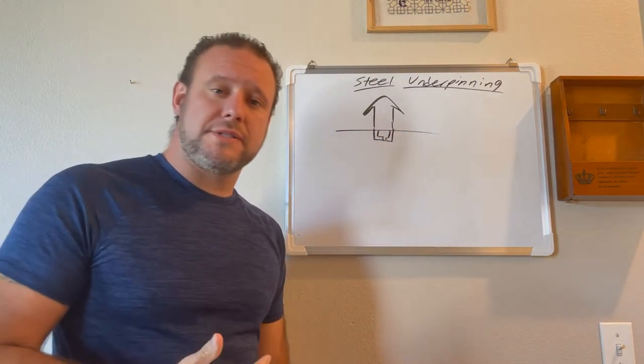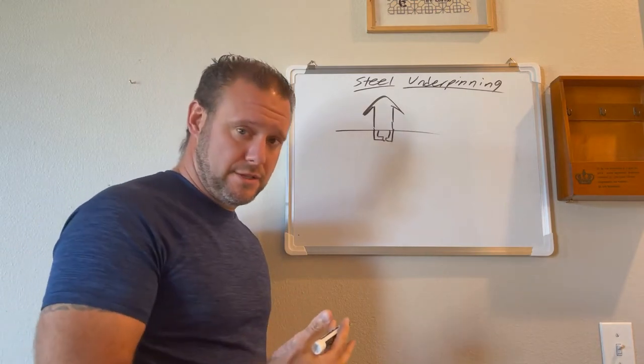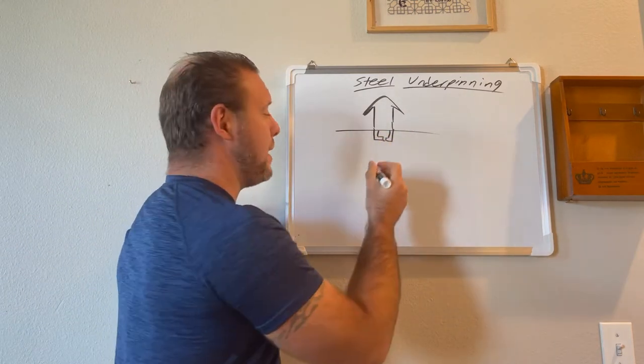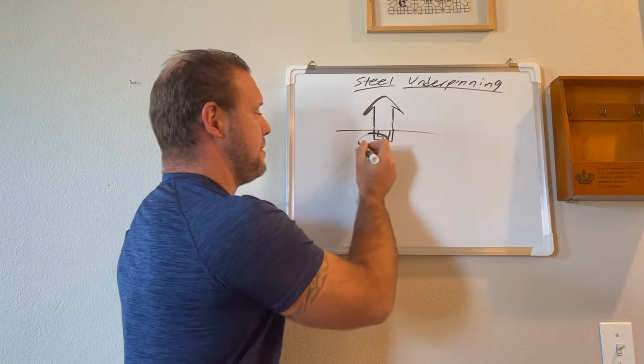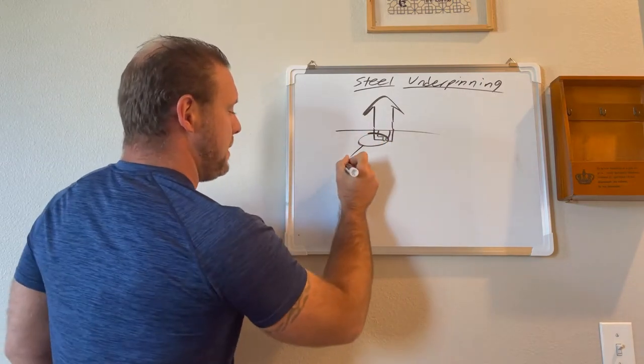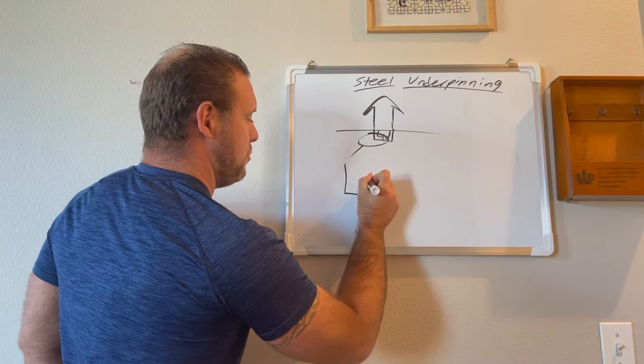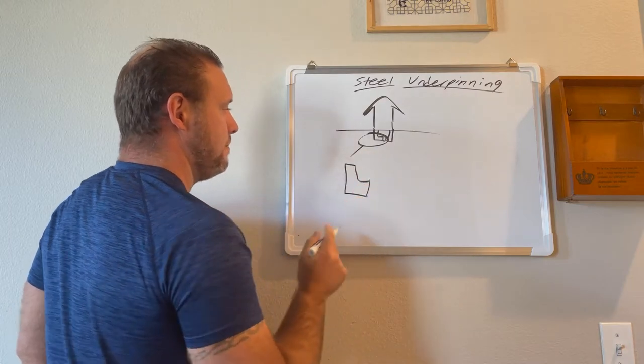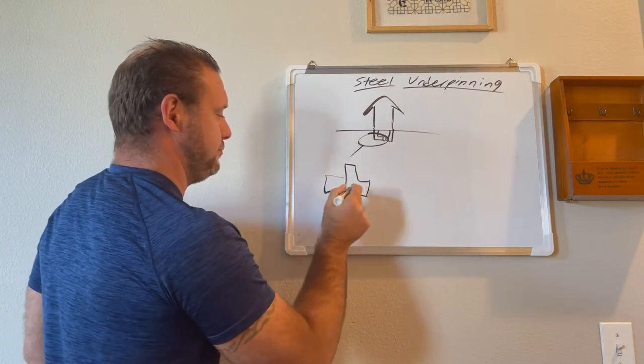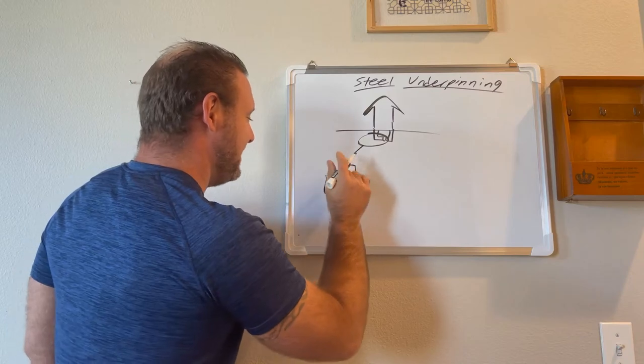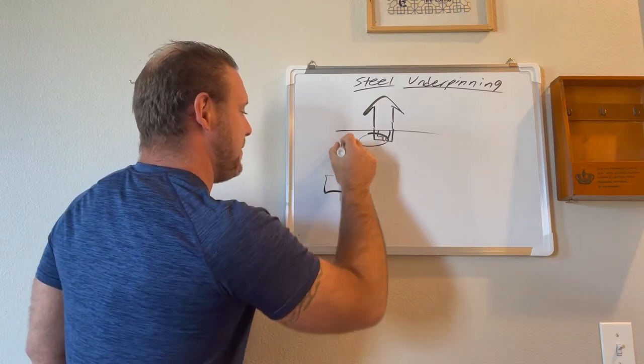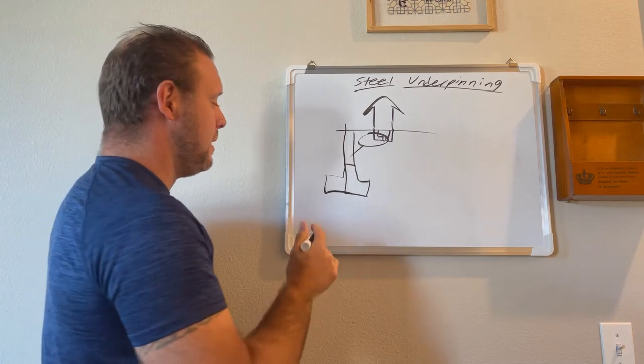So all steel underpinning is, is attaching a metal bracket and we'll zoom this up over here. So you've got a big footing. Boom. Like so, right? So you've got a big footing here and the house sits on top, right?